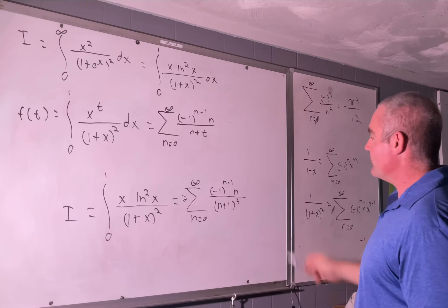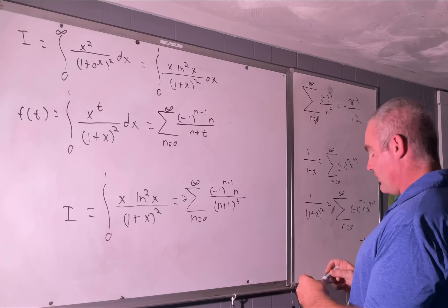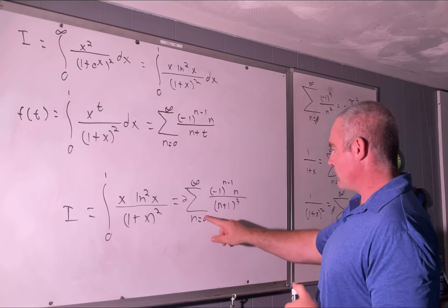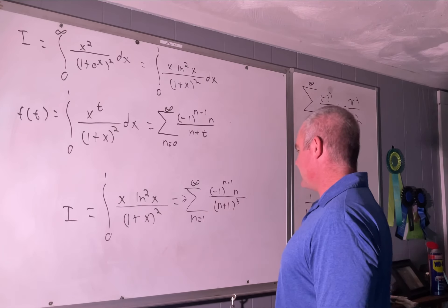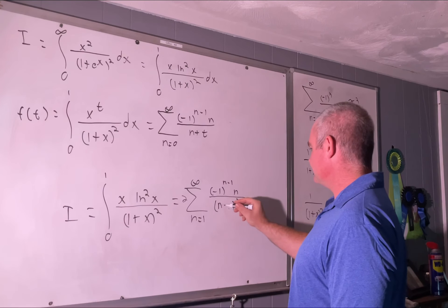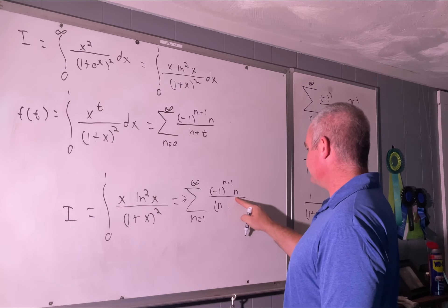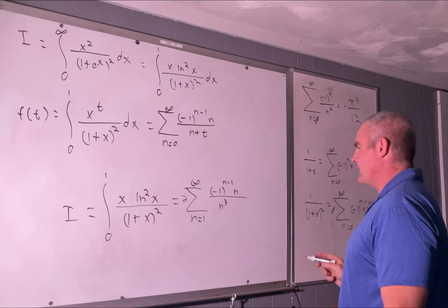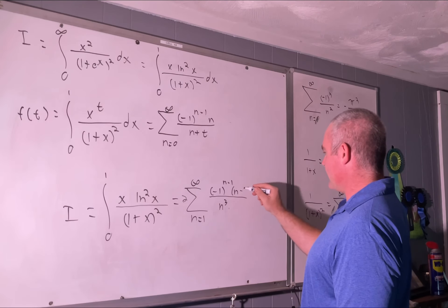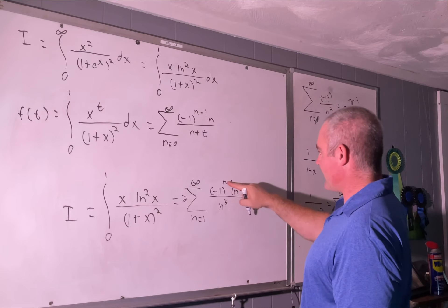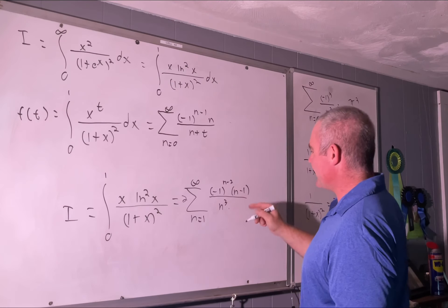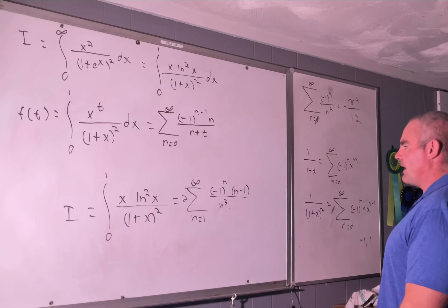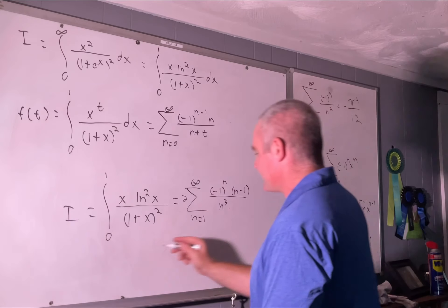Now what we're going to do is perform a manipulation on this. We'll increase our index on n by one, therefore we need to subtract it. This will just become n³. And this will become, we'll subtract one from this n. We add it so we need to subtract, so this will become n-2, but that's just going to be the exact same thing as if it was just n.